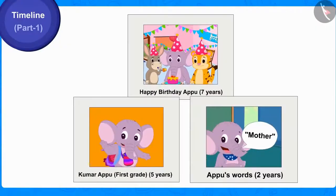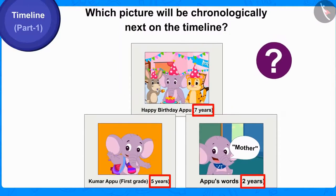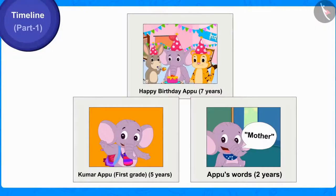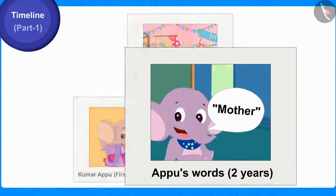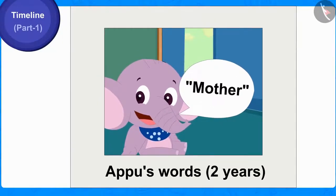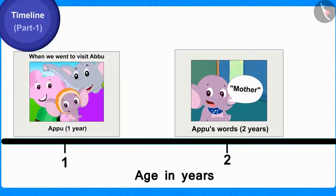Now can you tell out of these pictures the age of which picture will be chronologically next on the timeline? Well done, children, you have found the correct answer. This picture, in which Appu was two years old, will be shown chronologically next on the timeline by writing 'two years' on it.